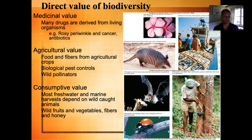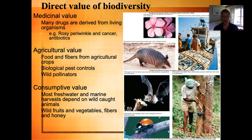There's also the consumptive value. We eat a lot of fish in the world, and freshwater and marine harvests depend on wild-caught animals. If we over-exploit them, there aren't going to be any more. Rubber is another example — in the picture on the lower right-hand corner, a man is cutting into the bark of a rubber tree and extracting the gum, like the sap, from which we produce rubber. Having a diverse ecosystem has a lot of value, and we should do what we can to maintain that biodiversity.